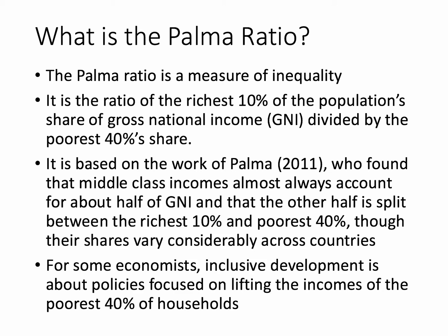Palma found using research that middle class incomes always account for around about half of national income, and often times the other half is split between the richest 10% and the poorest 40%. Indeed, for some economists, inclusive development now is all about trying to focus on lifting the disposable incomes of the poorest 40% of households. So the Palma Ratio becomes important.